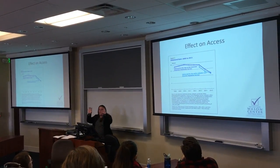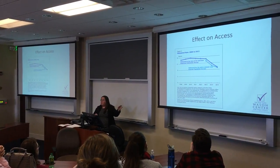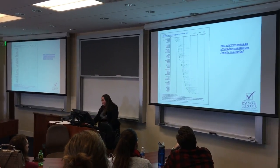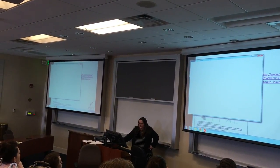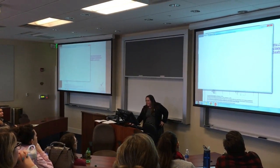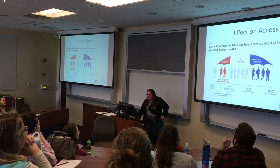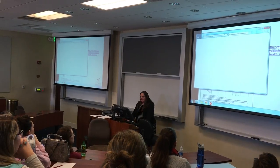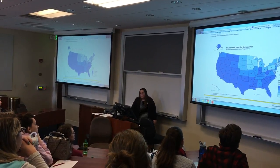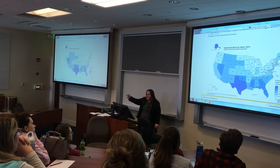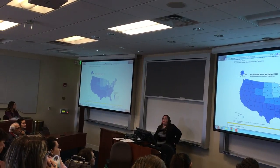Looking at the effects — our three-tiered system of access, costs, and outcomes — access is the one area where the ACA truly had a remarkable impact. This graphic shows a period of years leading up to the ACA and afterwards. You can see: 2011, 2012, 2013 — the ACA kicks in on access — and boom, that's a dramatic reduction in the uninsured rate. That's the one area where the ACA has performed quite well.